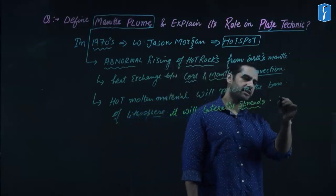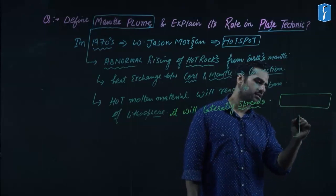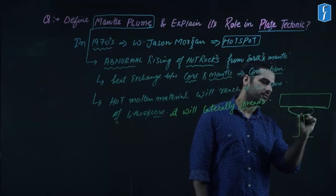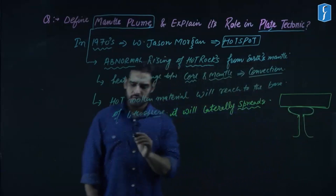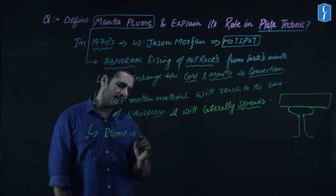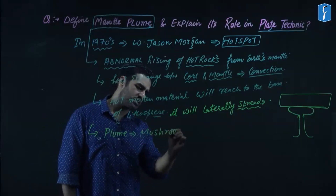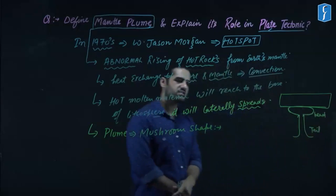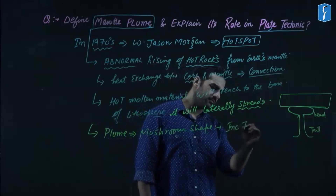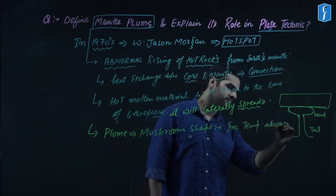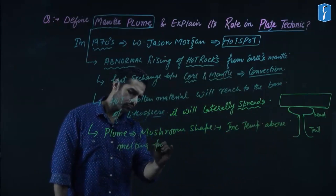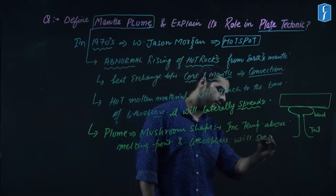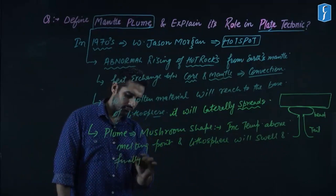Looking at the figure, assume this is a mantle plume rising. As it reaches the base of the lithosphere, it gets accumulated and spreads. This accumulation results in a mushroom-shaped structure — with a tail and a head. This increases the temperature above the melting point, causing the lithosphere to swell and finally become weak.